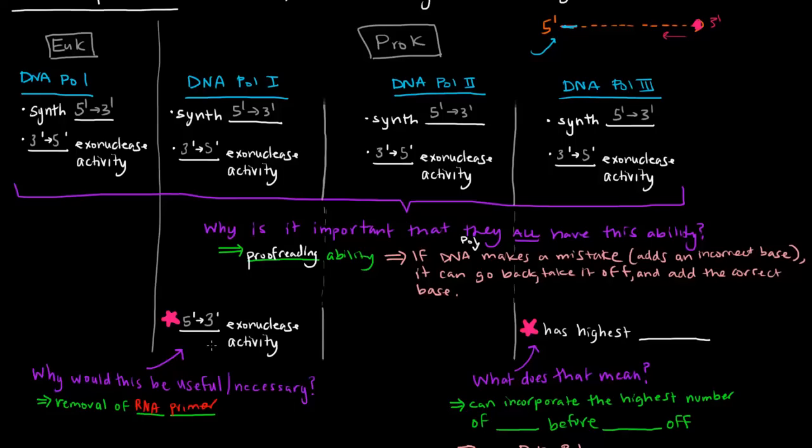So it's involved in removing the RNA primer. It wouldn't be able to do that without this 5' to 3' exonuclease activity, and it's the only one of these three that has that. Keep in mind, these three DNA polymerases are only in prokaryotes.